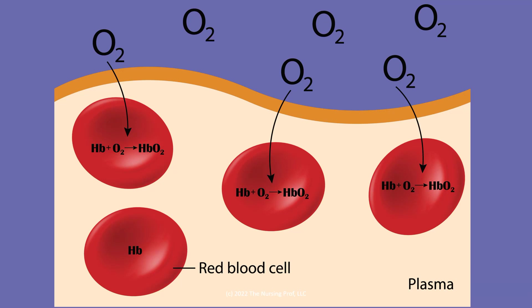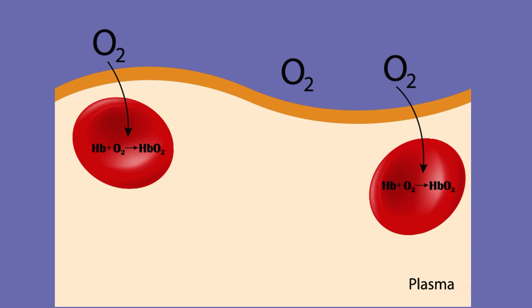However, what happens if the patient becomes anemic? We lose some of these red blood cells. Now we don't have as much oxygen getting to the tissue, and the patient may end up having some tissue hypoxia as a result.